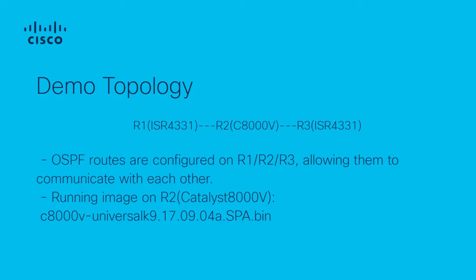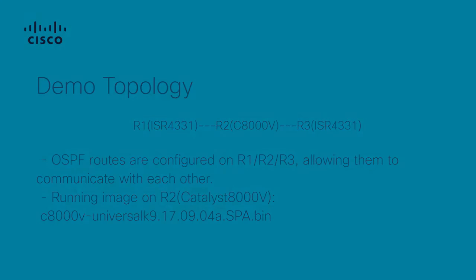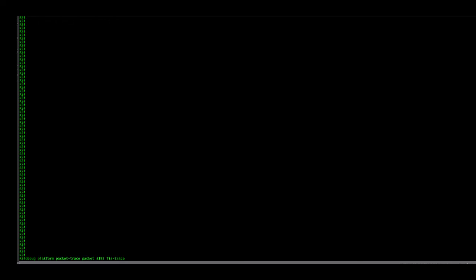So now, let's start the configuration on R2. We will do the Packet Trace configuration to check the ingress and egress packets through the Gigabit Ethernet 1 interface. We will execute the commands one by one. First, specify the number of packets and get detailed information by: debug platform packet-trace packet 8192 fte-trace.